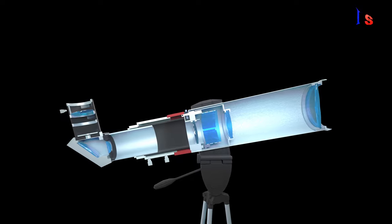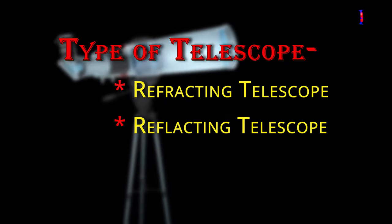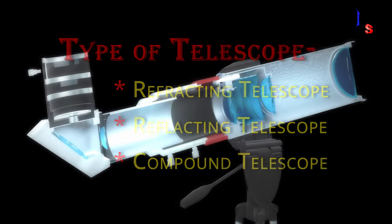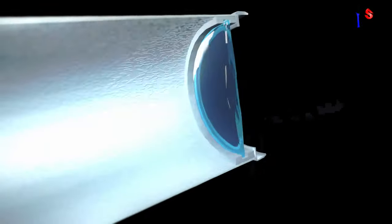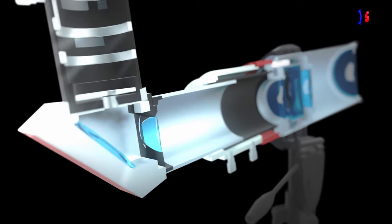Mainly there are three types of telescope: refracting telescope, reflecting telescope and compound telescope, which are used for different purpose. Today we will talk about refracting telescope.